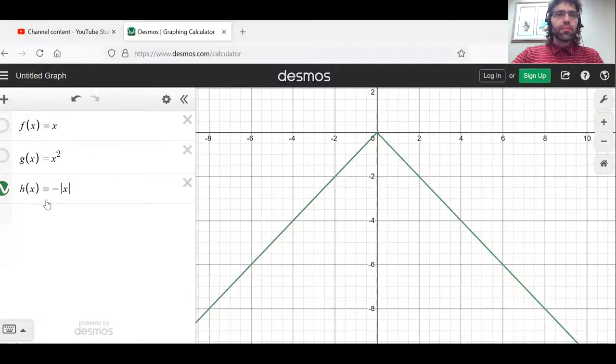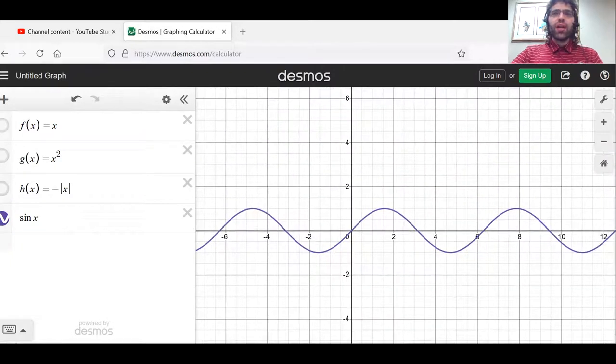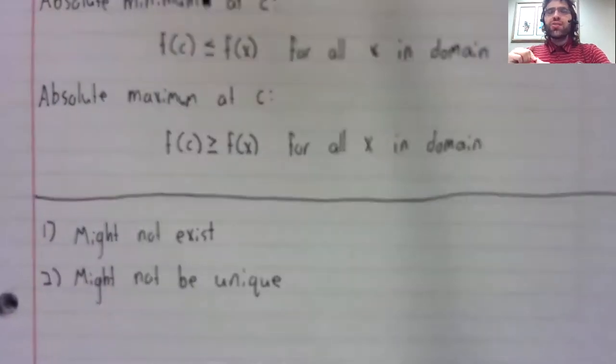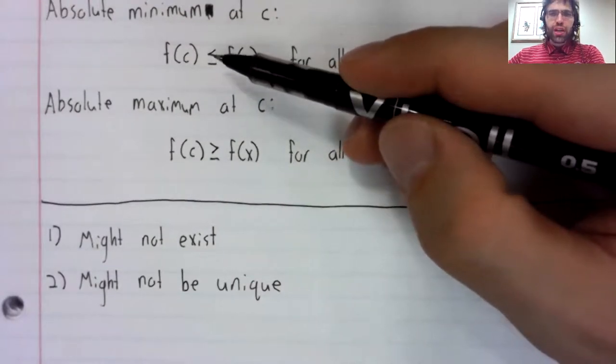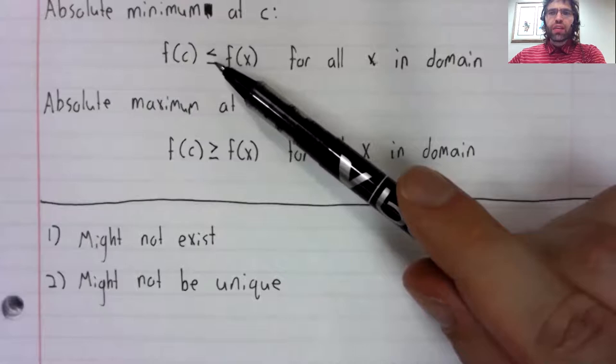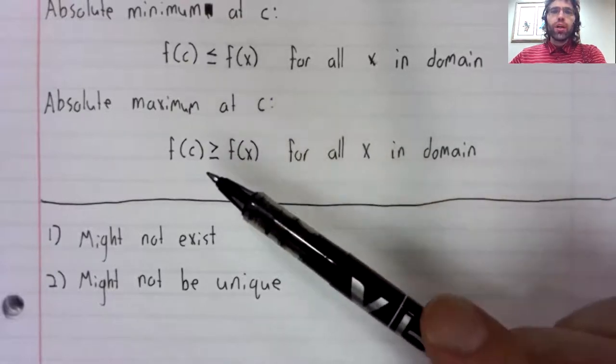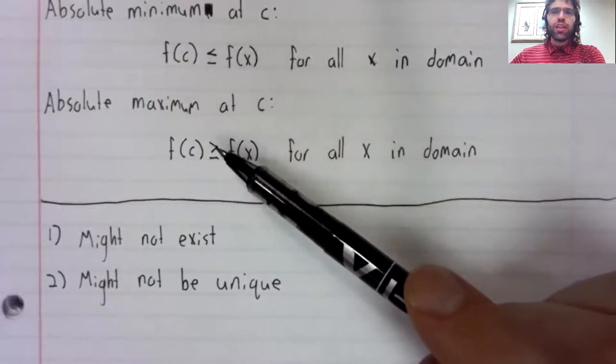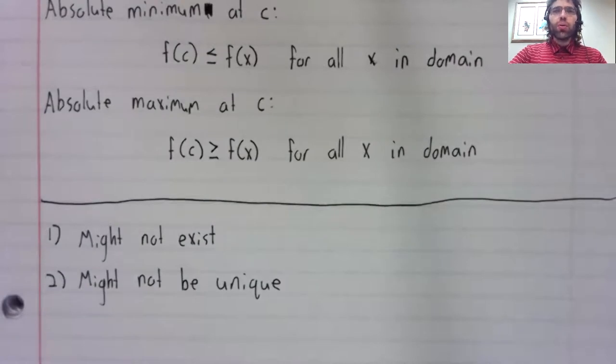But look, for example, at the sine of x, and then go back and look at this definition. You see these inequalities aren't strict. A minimum doesn't have to be less than all of the other values, just less than or equal to. The maximum doesn't have to be greater than all of the other values, just greater than or equal to.